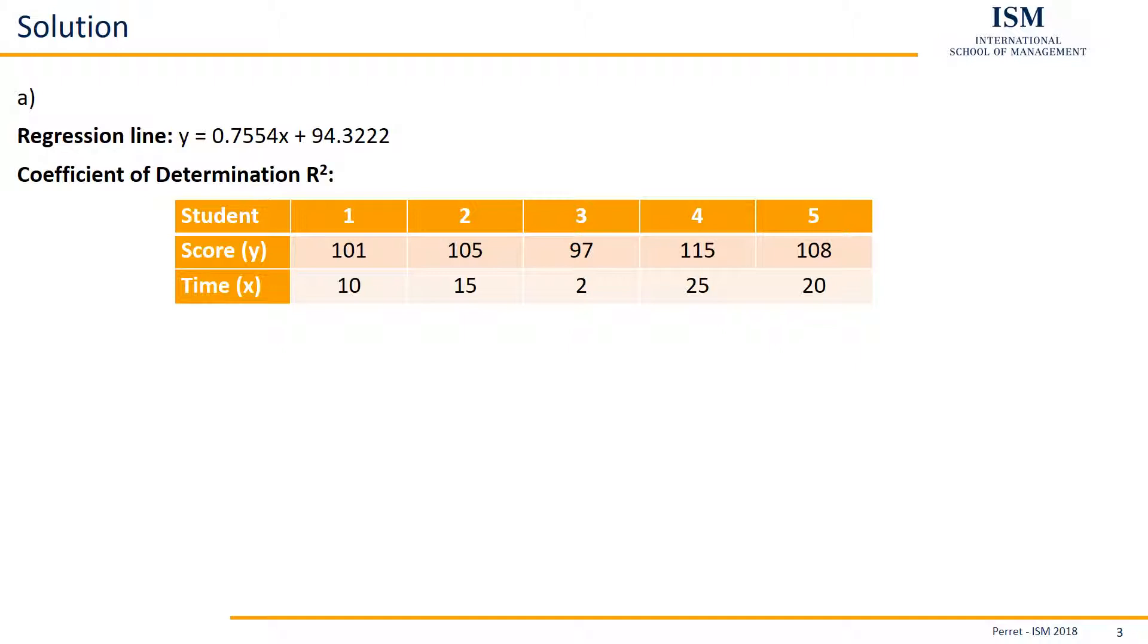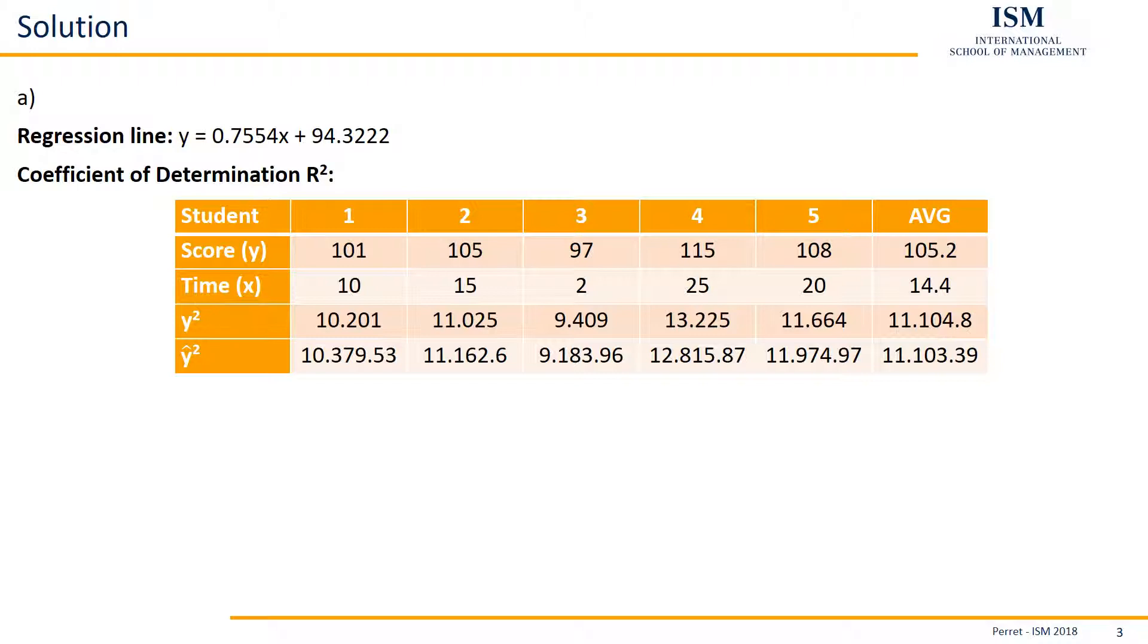Here we're going with the more general approach. This means we add first one row where we calculate the Y values being squared. So 101 being squared, 105 being squared, and so forth. Then we add a row where we square Y hat variables. What's the Y hat? The Y hat is the value we get when we insert X into the regression line. So if here we insert 10, we have 0.7554 times 10 plus 94.3222, this result is then squared, giving us here Y hat squared. So we're doing this and then we're calculating for all four rows the averages, because that's the four values we're going to need next.